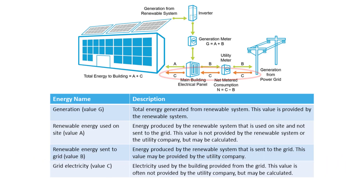Therefore, the total electricity consumed on-site at a building with renewable power generation can be defined as Flow C, grid electricity, plus Flow A, energy generated on-site and used on-site.